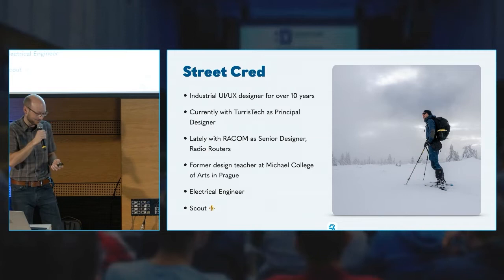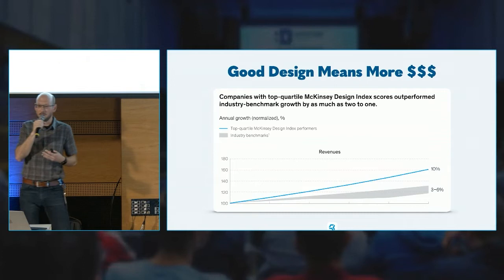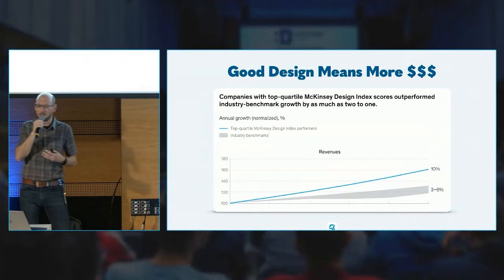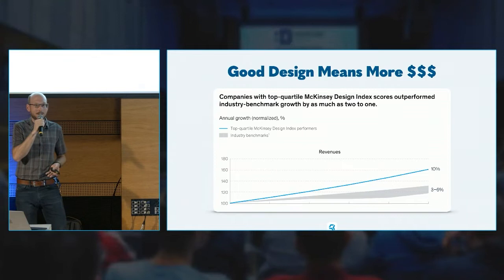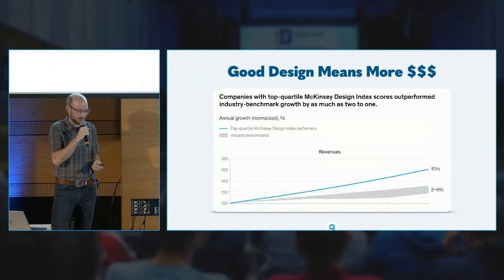This might be interesting to you — there actually are designers focusing on hard tech. Why does design matter? Good design means more money. Even though we're talking open source, open source is being used by for-profit companies that need to make money to pour it back into open source development. McKinsey found that companies with good design have two to three times more revenue than those who don't. That's a pretty significant number.